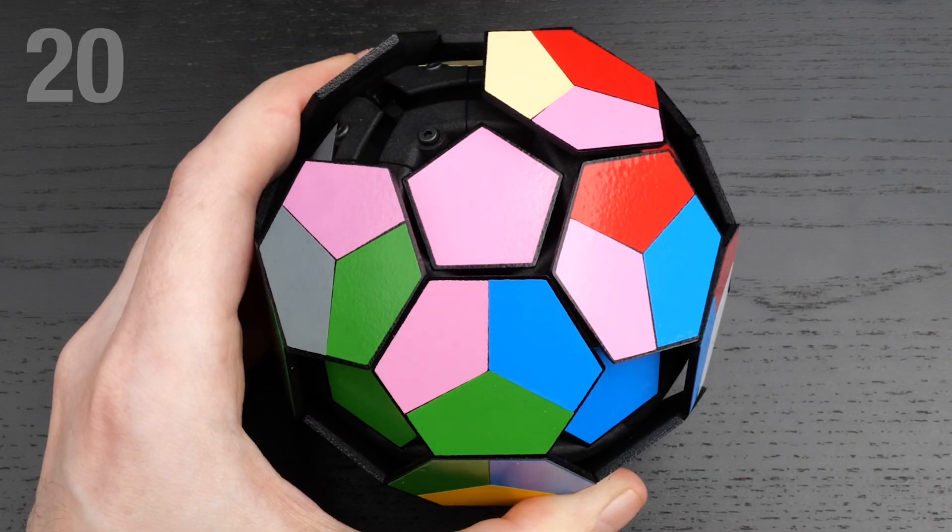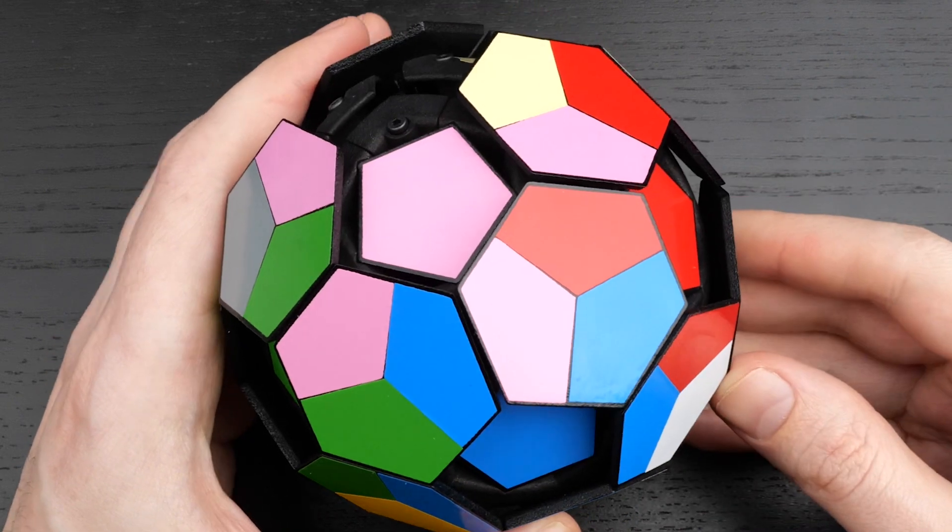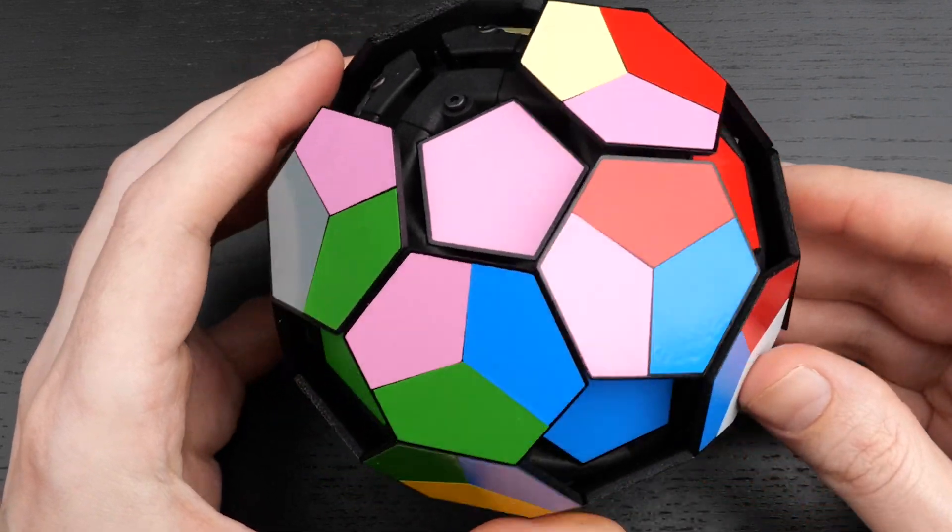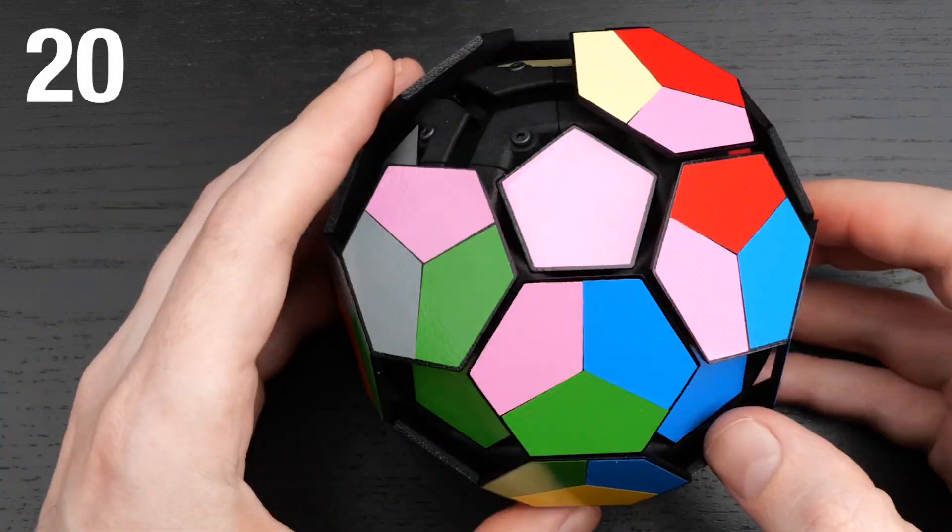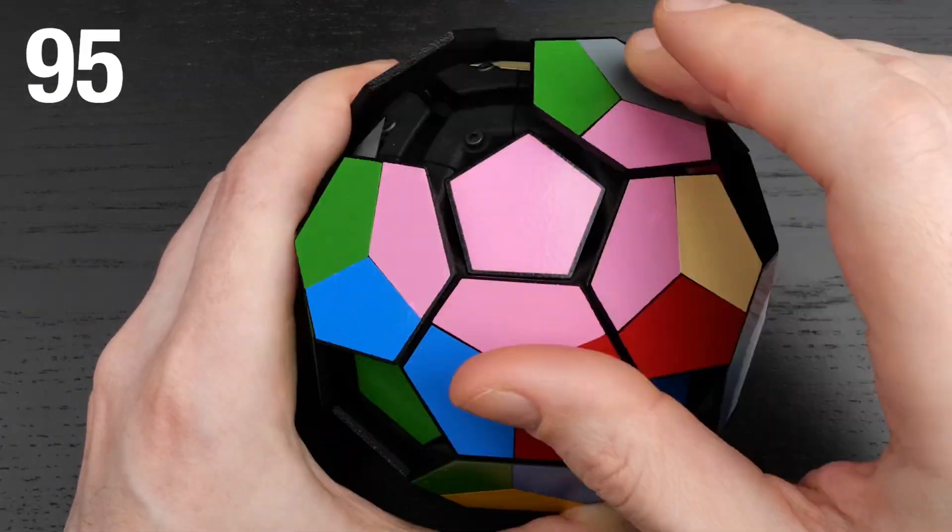Okay, so they're in the positions they started in, but they have all also rotated by a sixth of a turn. To actually get back to the start, you have to do this whole procedure six times for a total of 120 moves.